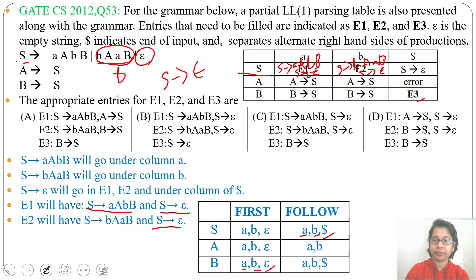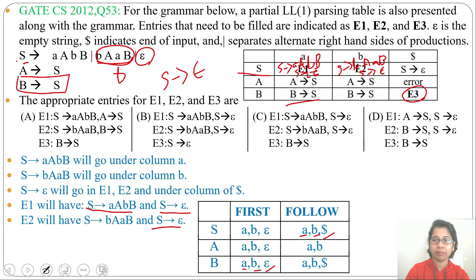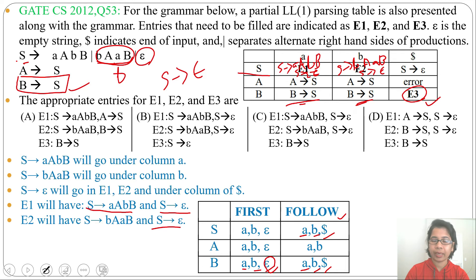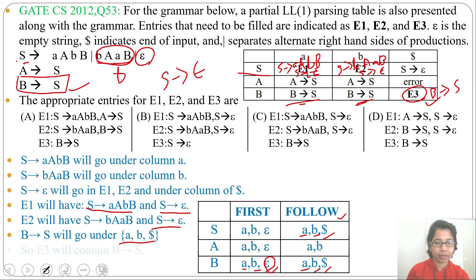Now let's find E3, which is in the B row. FIRST(B) = {A, B, epsilon}. The production B → S goes in the A and B columns. Since epsilon is in FIRST(B), we also check FOLLOW(B) = {A, B, dollar}. So B → S also goes in the dollar column. E3 will contain B → S.